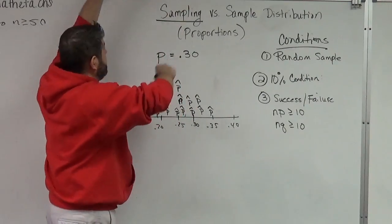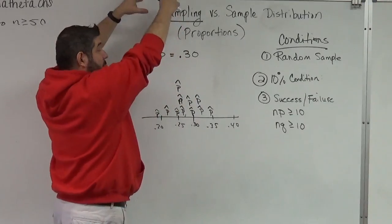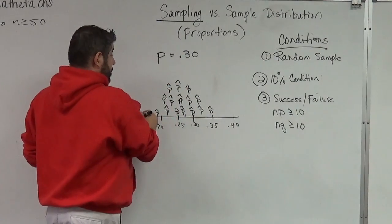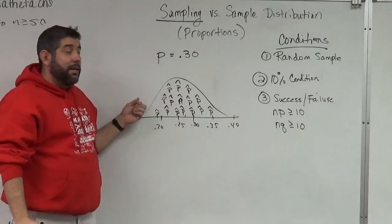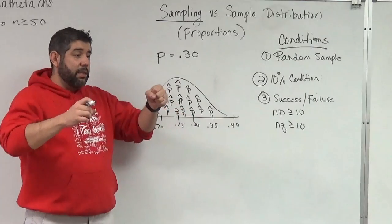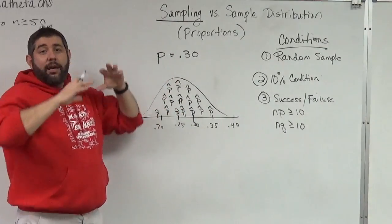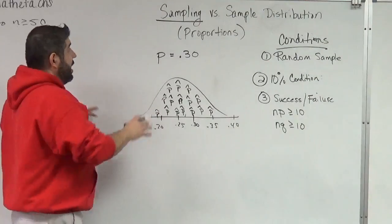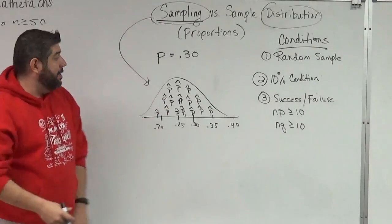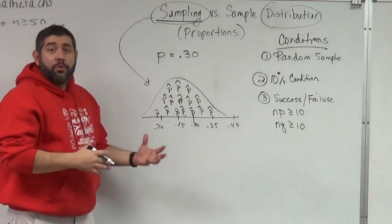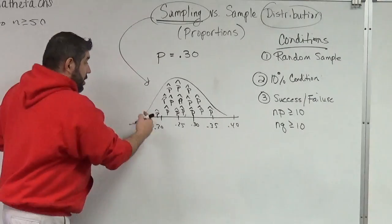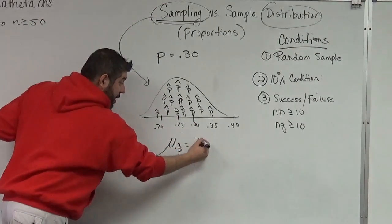They start to pile up, and when you have a bunch of things that pile up like that, they form a shape. That pile is called a normal model. It turns out that if we take those proportions and keep stacking them — taking each proportion from those samples — we get a sampling distribution: a distribution of all the samples I was taking. And in fact, this distribution is normal. The formulas for the mean and standard deviation are given on the AP exam formula sheet.